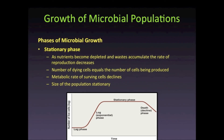During the stationary phase, the growth curve levels off because the number of new cells equals the number of dying cells. Several factors contribute to the decline of the growth rate, including the depletion of nutrients and oxygen in the medium. There is also an accumulation of organic acids and other waste products from metabolic activities that interfere with microbial growth. As cells enter the stationary phase, they are essentially entering a survival mode that decreases their rate of growth.